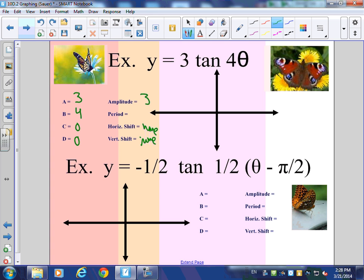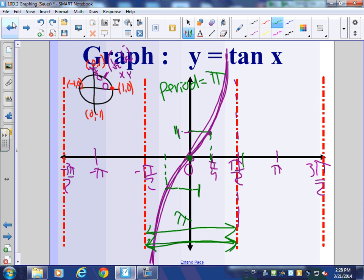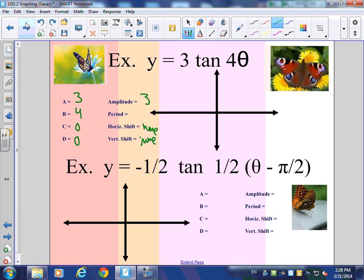Period. What did we say a complete cycle was? π. So before we had 2π over B, the period now used to be 2π/B. What is it now for tangent? Yeah, unfortunately it's different. π over B. And by the way, this is not a 6. My B's look like 6s. So a single π/B is my period.